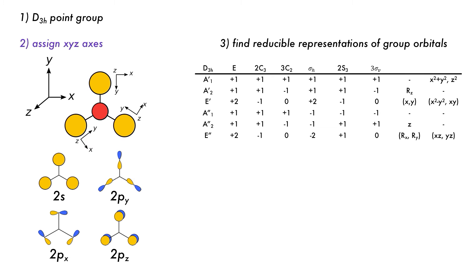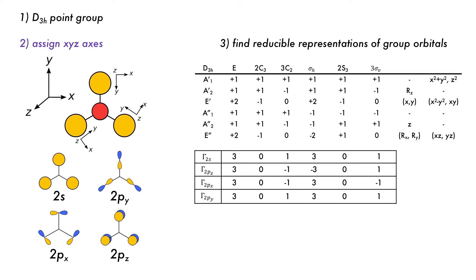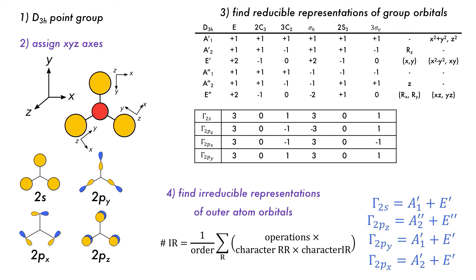We want to find the reducible representations for each kind of atomic orbital — each of the S and P orbitals. For example, the S orbitals give 3 for E; under C3 rotation, all move, giving 0. For C2 rotation, 1 remains static, giving a value of 1. Under sigma H, nothing moves, giving a character of 3. Under S3, all of them move. And a vertical mirror plane passes through one atom and not the others. Then we reduce these reducible representations using our equation to give the irreducible representations shown here.